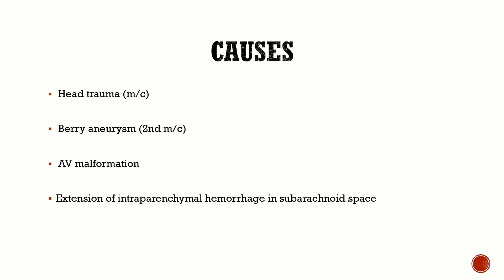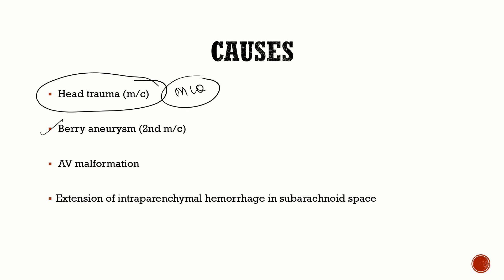Coming to the important causes of subarachnoid hemorrhage: we usually think that berry aneurysm is the most common cause, but berry aneurysm is the most common cause of spontaneous SAH only. When you take SAH as a whole, head injury is the most common cause. This is an important MCQ. The top cause of SAH is head injury, followed by berry aneurysm. Other causes include AV malformations and extension of intraparenchymal hemorrhage into the subarachnoid plane.